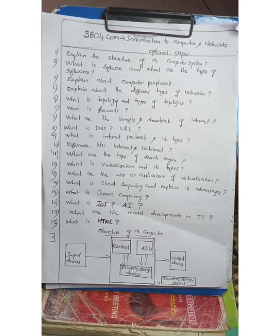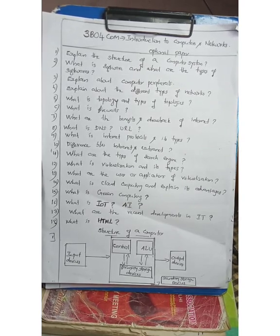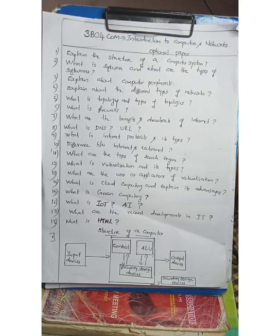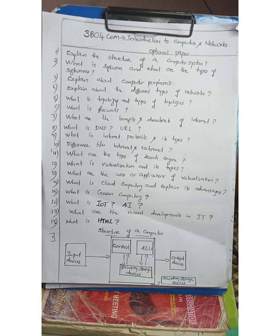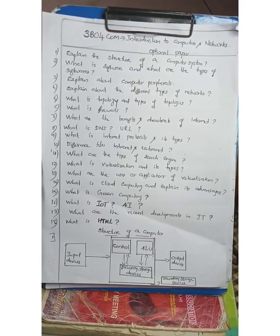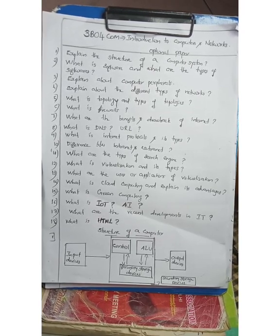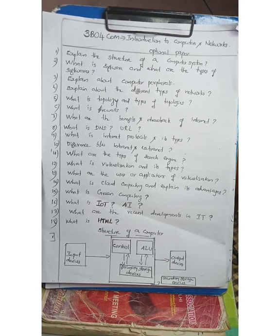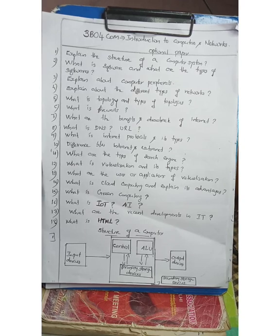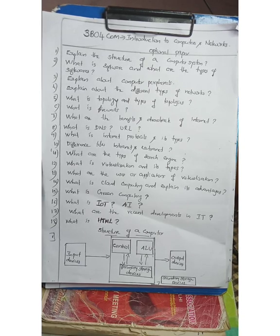The next one: what is Cloud Computing and explain its advantages. Cloud computing is a term referred to storing and accessing data over the internet. It does not store any data on the hard disk of your personal computer; you can access data from a remote server. Here we have unlimited data storage in cloud computing. Cloud computing services include server storage, databases, network software, etc. over the internet. Its advantages are reduced IT costs, security, reliability, high speed backup and restore data, mobility, unlimited storage capacity, etc.